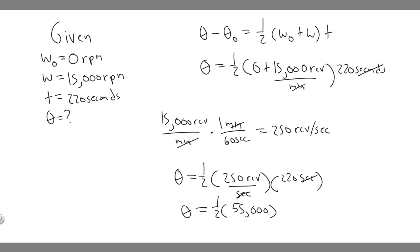So if you go ahead and do this, if you do 55,000 times one half, you're going to get 27,500. So this is going to be the number of revolutions. 27,500 revolutions.